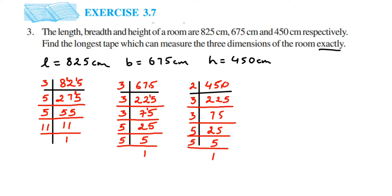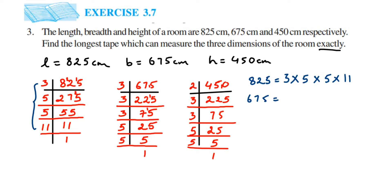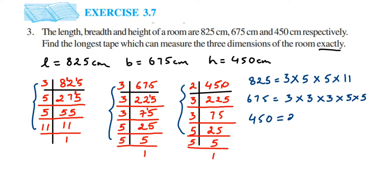Now let us write all the prime factors. 825 can be expressed as 3 × 5 × 5 × 11. The next number, 675, can be written as 3 × 3 × 3 × 5 × 5. And 450 can be written as 2 × 3 × 3 × 3 × 5 × 5.